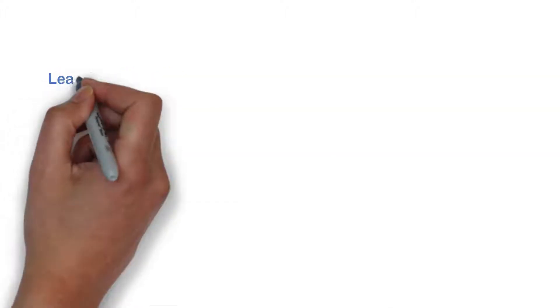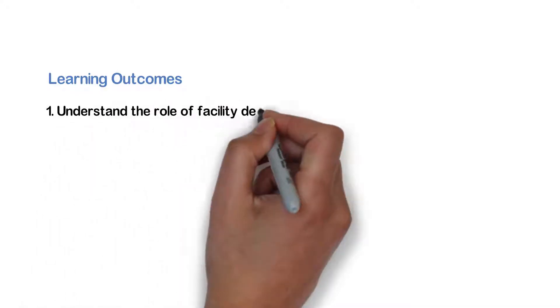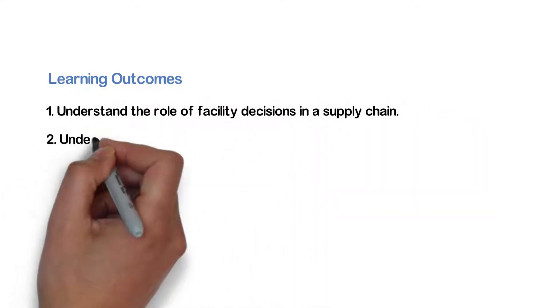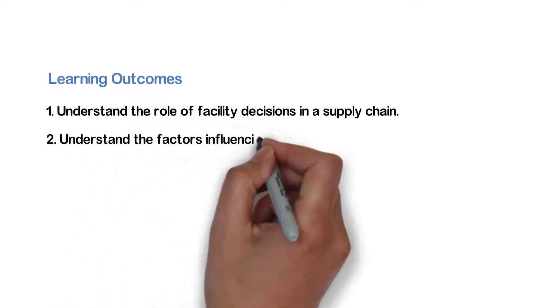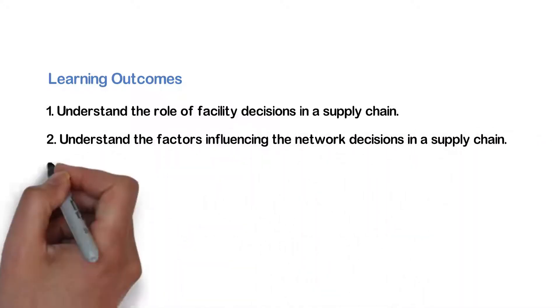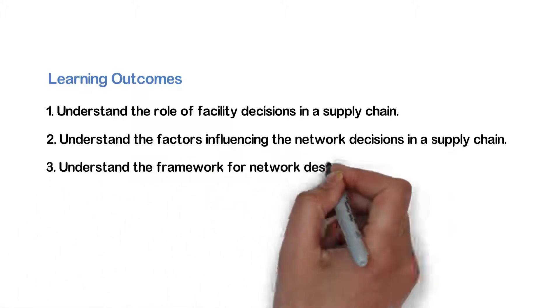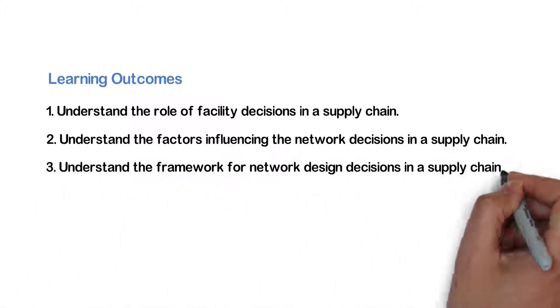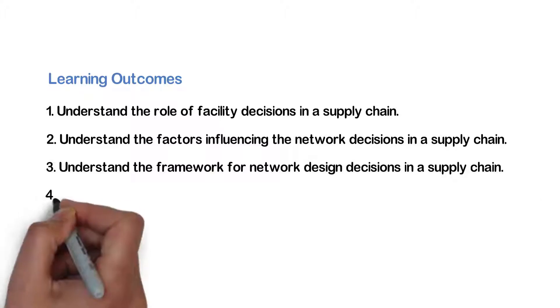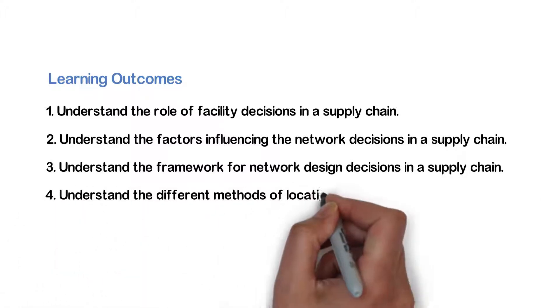The learning outcomes would be an understanding of the role of facility decisions in a supply chain, an understanding of the factors influencing the network decisions in a supply chain, an understanding of the framework for network design decisions in a supply chain, and to understand the different methods of location planning.